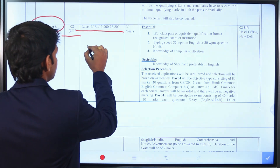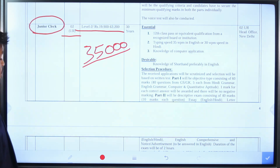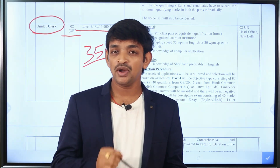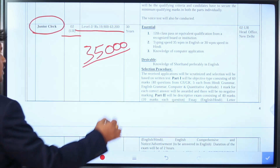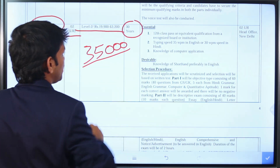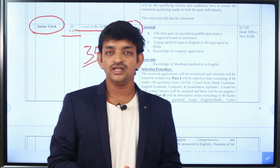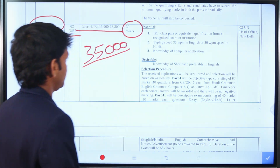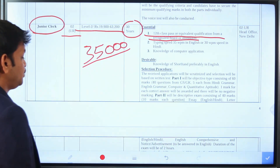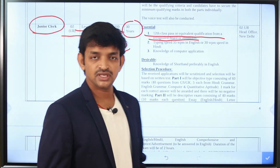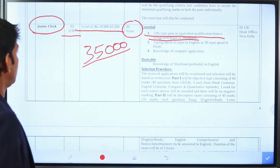The minimum age to apply is 18 years. Regarding educational qualifications, you need an intermediate or equivalent qualification. This applies to streams such as MPC, CEC, and others to be eligible for the clerk post.